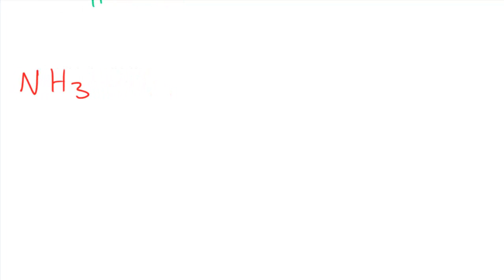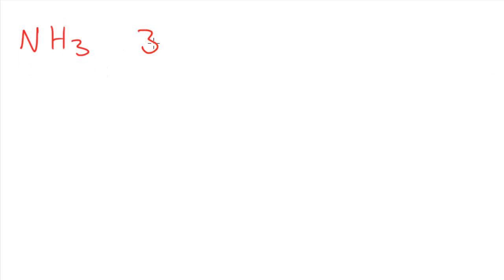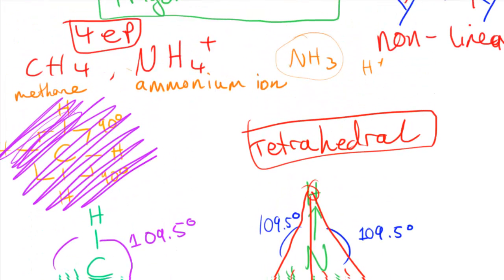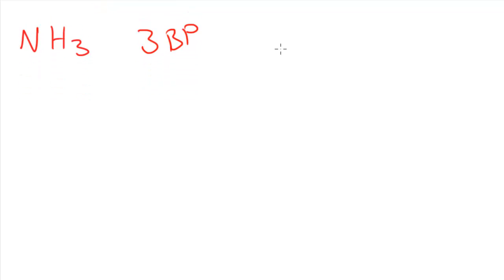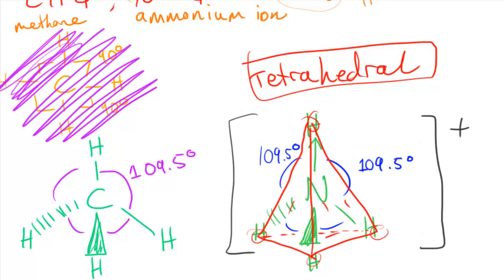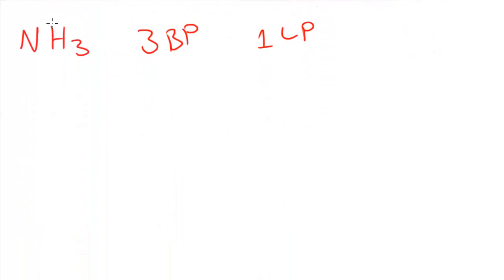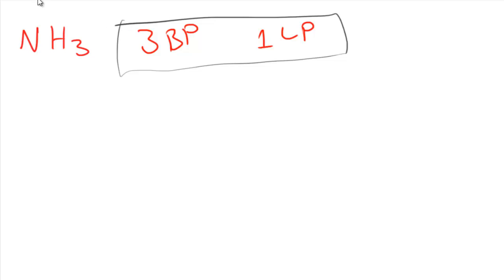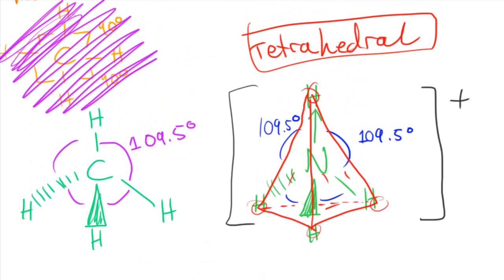NH3 has three bonded pairs and one lone pair, so we're still looking at four electron pairs total. In the previous example, that lone pair was utilized to make the ammonium ion. So we've got three bonded pairs and one lone pair in ammonia.